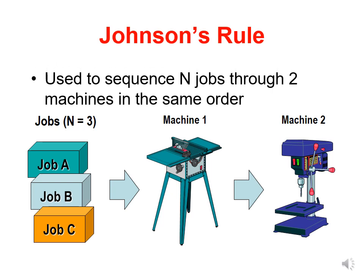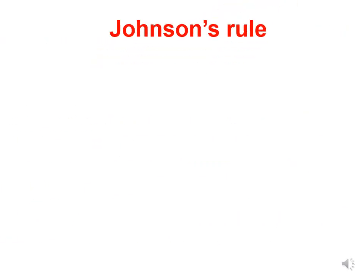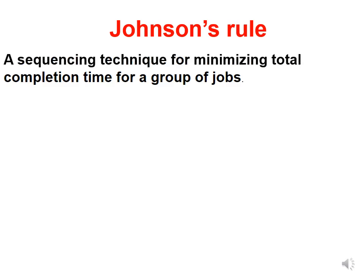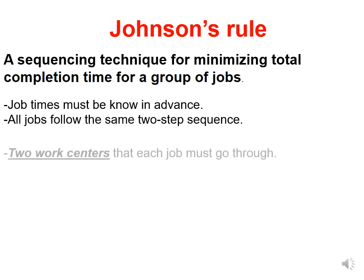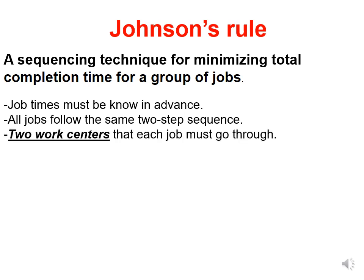Johnson's Rule is used to sequence N jobs through two machines in the same order. It is a sequencing technique for minimizing total completion time for a group of jobs. Job times must be known in advance, all jobs follow the same two-step sequence, and there are two work centers or machines that each job must go through.